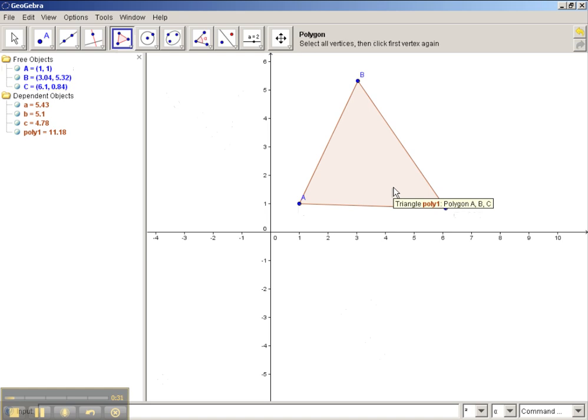In order to create our circumscribed circle of this triangle, we first have to construct the three perpendicular bisectors of these three sides of the triangle we created.